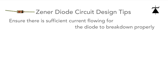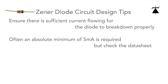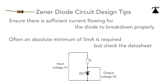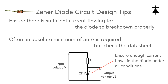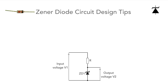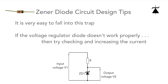The second tip is to make sure there's enough current flowing to enable the diode to break down properly. Diodes often need an absolute minimum of about 5 milliamps before they'll break down. If you're trying to save power, look very carefully at the minimum value, particularly if it's going to have to operate over a temperature range. I've fallen foul of this before — purely because I wasn't giving the Zener diode enough current to break down properly. I then increased the current flowing, and the circuit worked perfectly well.